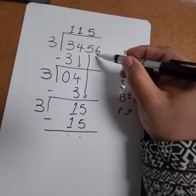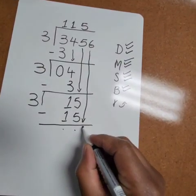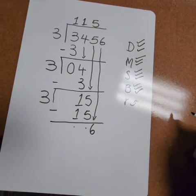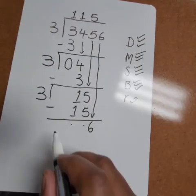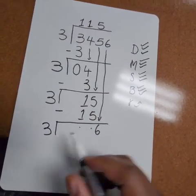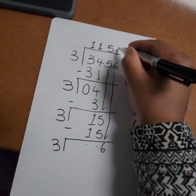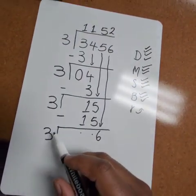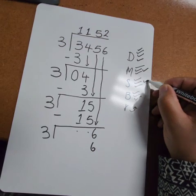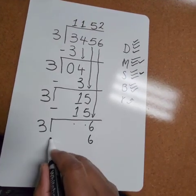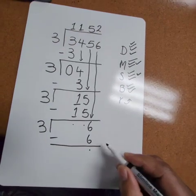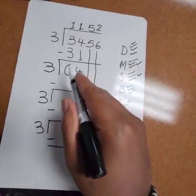Do we still have something to bring down? Yes, the 6. So we've brought down the 6. Now we repeat. How many threes are in 6, or 6 divided by 3? That will give us 2. Then 3 multiplied by 2 will give us 6. 6 minus 6, then that will give us 0. Then we check, is there anything left to bring down? No.